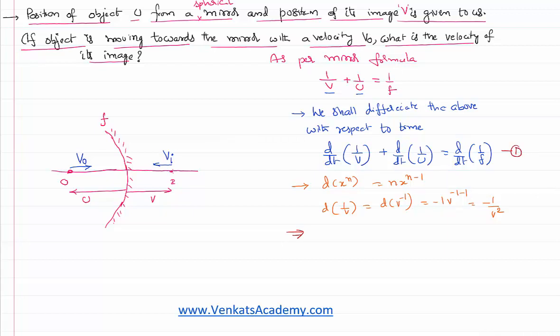From this equation, the derivative of 1/u is minus 1/u² times du/dt, as per the chain rule. And d/dt of f equals 0 because focal length of a mirror doesn't vary with respect to time.